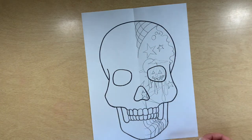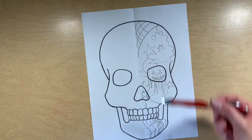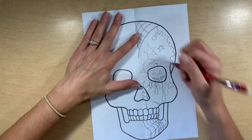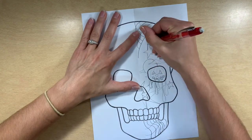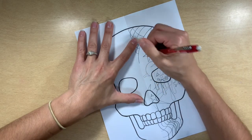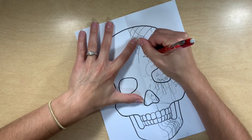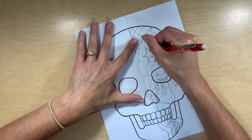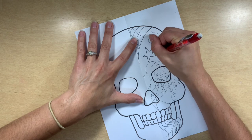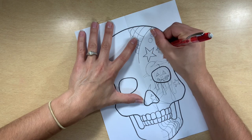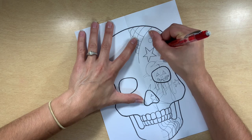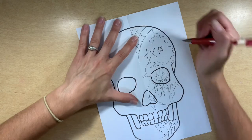Once you get done drawing your one side with all your details, the next thing you're going to do is go in and trace over all these lines really dark. When you're tracing over them all really dark, please take your time. You don't want to be giving everything a double line and making it look messy. Keep it neat, because if it looks messy now it's going to look messy when you transfer — it's not going to get better. In fact, it's probably going to get worse.